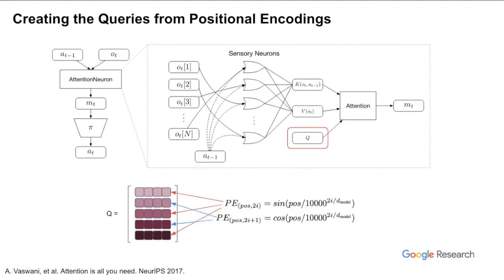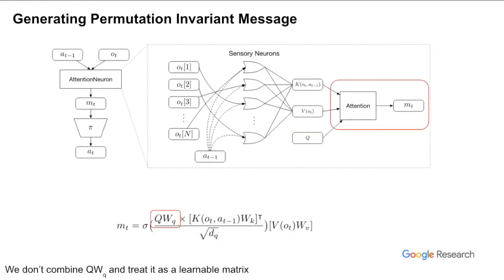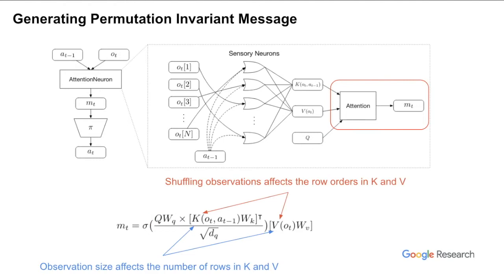As mentioned, the query matrix is independent of the input data — it is a bank of latent embeddings. In this work, we use the positional encoding from the transformer paper, where the row indices serve as the positions. We then use the attention mechanism to calculate the layer's output. As another design choice, although we could have combined q and Wq and treated it as a single learnable matrix, we don't do so because we can reduce the number of parameters by factoring them. Shuffling the observations only affects the row orders in the k and v matrices, with no effect on the output, so attention neuron generates permutation invariant messages. Changing the observation size only alters the number of rows in k and v without changing the shape of the output, so with proper normalization, attention neuron can handle arbitrary input sizes.